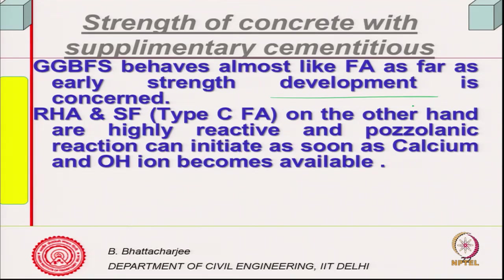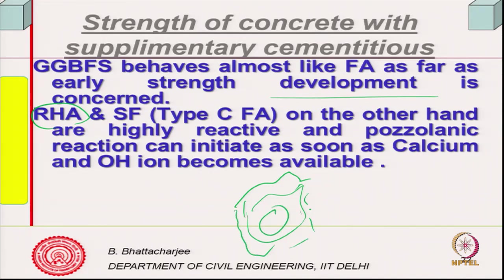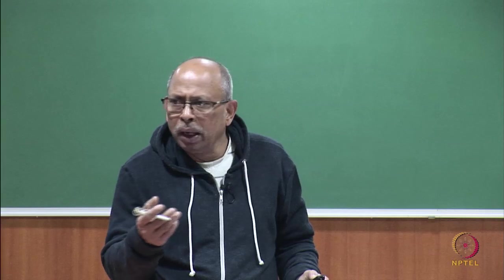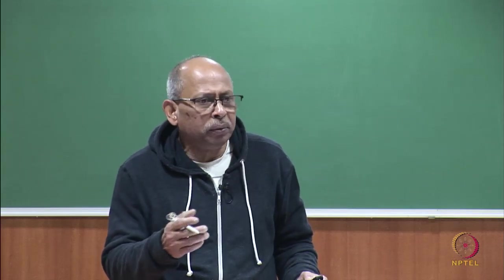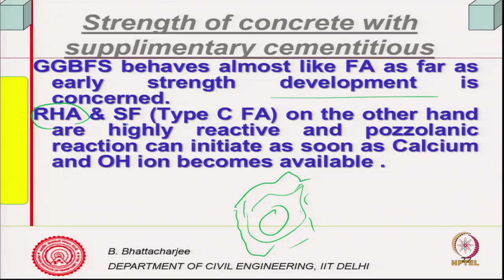Curing time required is more for these materials. Silica fume also requires high curing. Rice husk ash, as mentioned, is cellular in structure — they form cell-like structures. They are very reactive because their SiO₂ content is very high, which is reactive, and pozzolanic reaction can initiate as soon as calcium hydroxide starts liberating, meaning as soon as C₃S starts reacting.